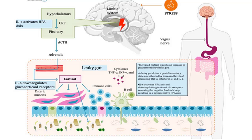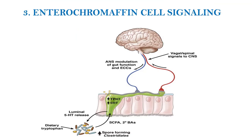So let's move on to the third channel of communication — enterochromaffin cell signaling. Enterochromaffin cells are responsible for the production of serotonin in the GI tract. 95% of the serotonin produced is stored in enterochromaffin cells and also in enteric neurons, and only 5% of it is stored in the central nervous system. Serotonin plays a major role in regulating GI motility and secretion. It also plays a major role in sleep, appetite, temperature, sexual behavior and pain sensation. The serotonin synthesized and released by enterochromaffin cells is regulated by spore-forming bacteria of the gut.